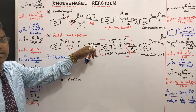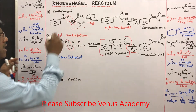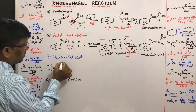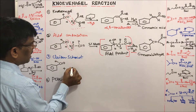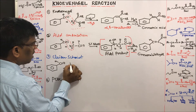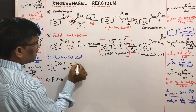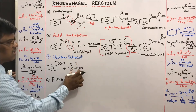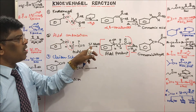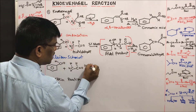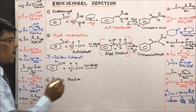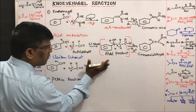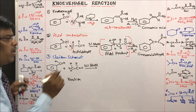Now let us look at the Claisen-Schmidt reaction. Here also the same benzaldehyde is used, and the active methylene compound is the same acetaldehyde. The key difference is the base: for Aldol condensation we use 1% NaOH (dilute), whereas for the Claisen-Schmidt reaction we use 10% NaOH — a stronger base. Sodium ethoxide can also be used.